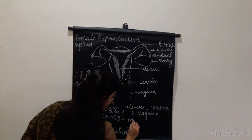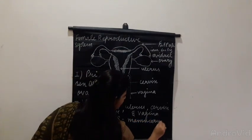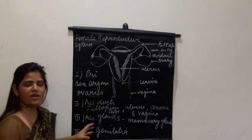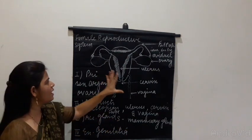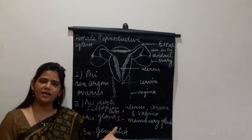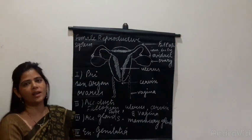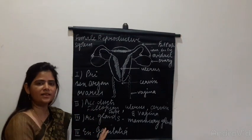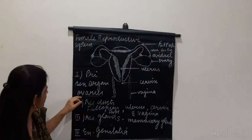Under accessory glands we have the mammary glands. Now, these mammary glands are not directly associated within the reproductive system the way reproductive glands are located inside the male reproductive system. Here they are not present within the system, but they are controlled by the hormones which are produced by the ovaries.